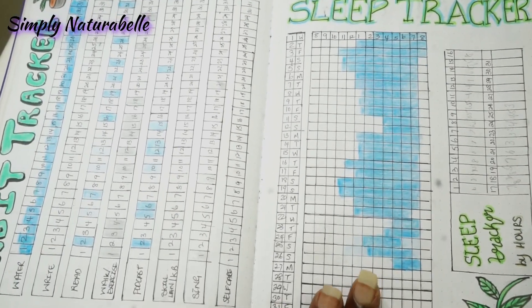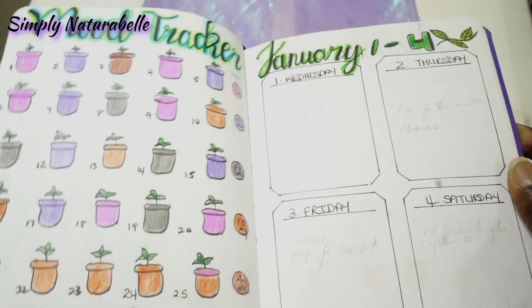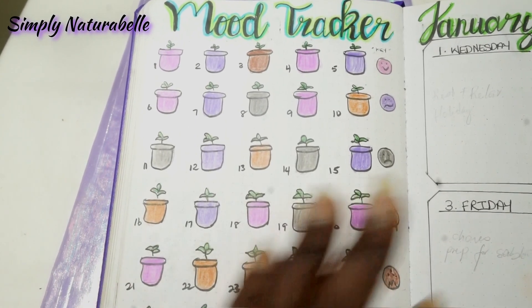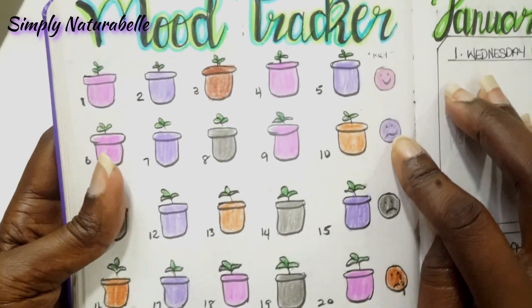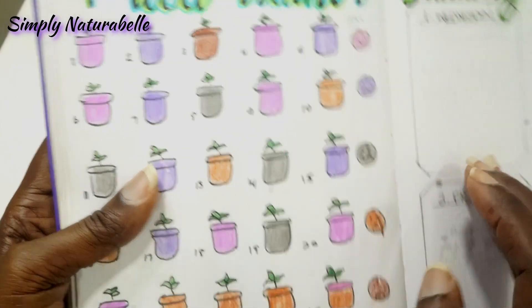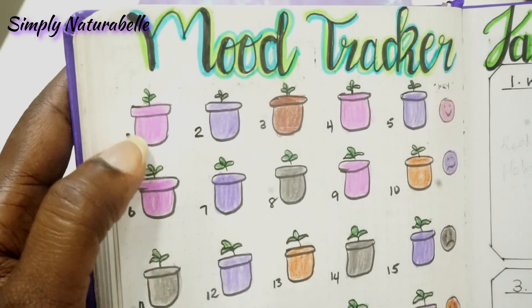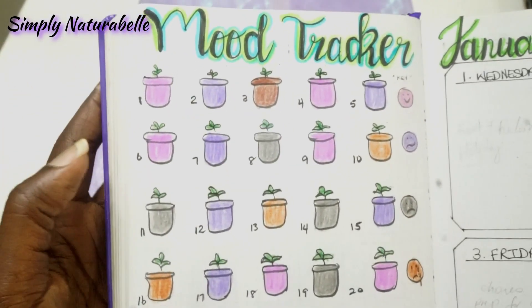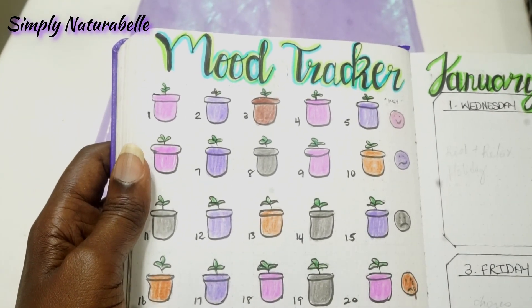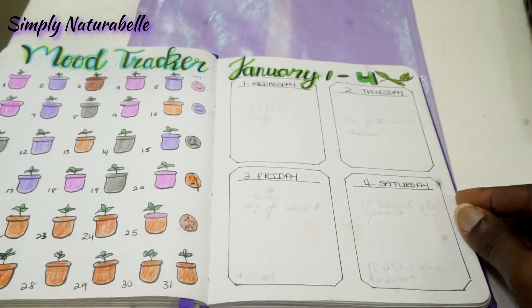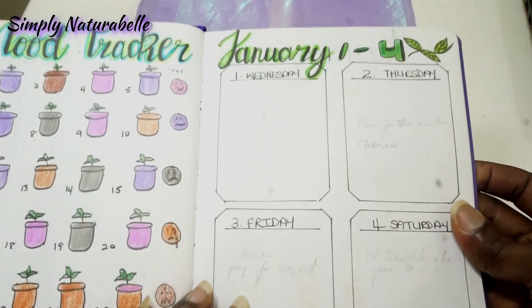I just decided to do a little planty picture there. My mood tracker — it was actually the first full month that I did track my mood and I'm very happy about that. I had happy, kind of like confused or not sure, sad, sad with tears like actually crying, and angry. I decided to draw some little pots and little plants, and because plants are usually green I left the plants green and colored the pots the different colors for the moods.